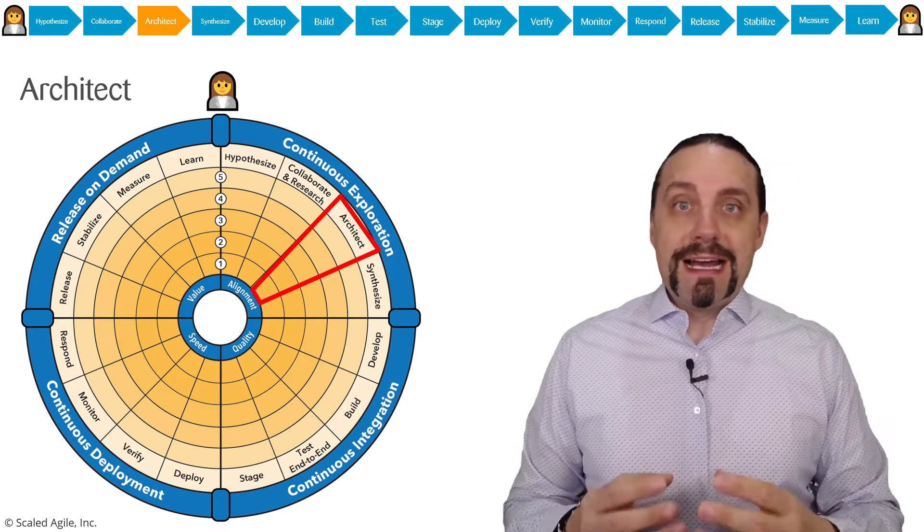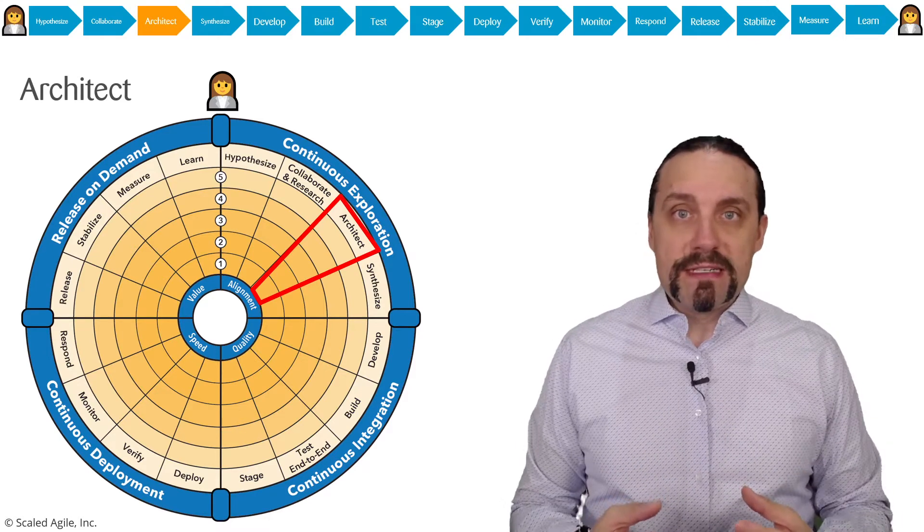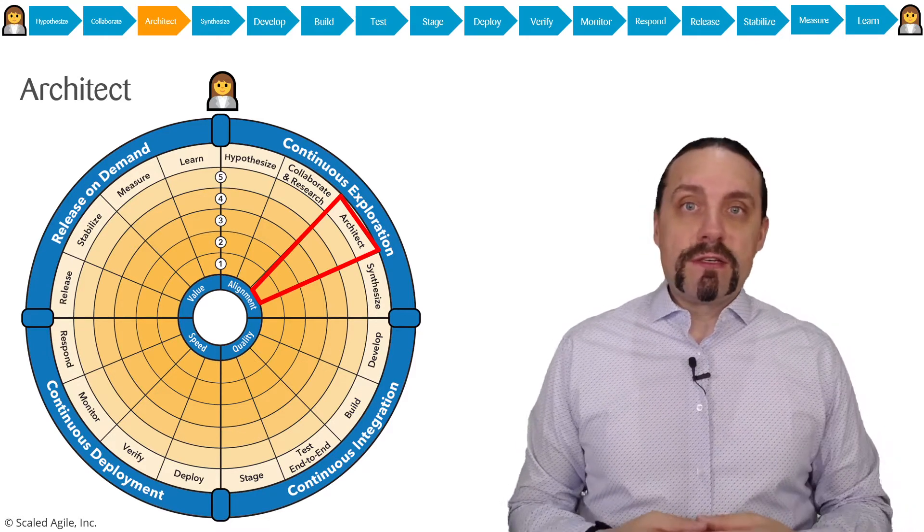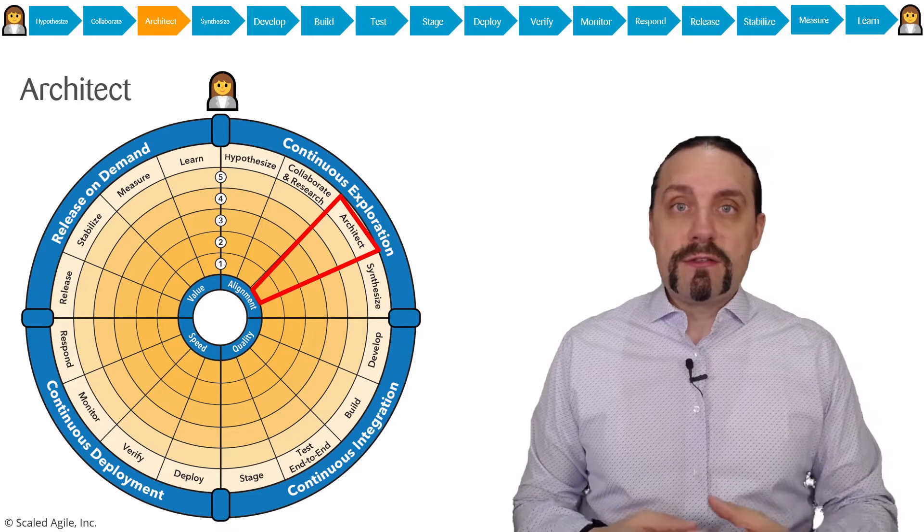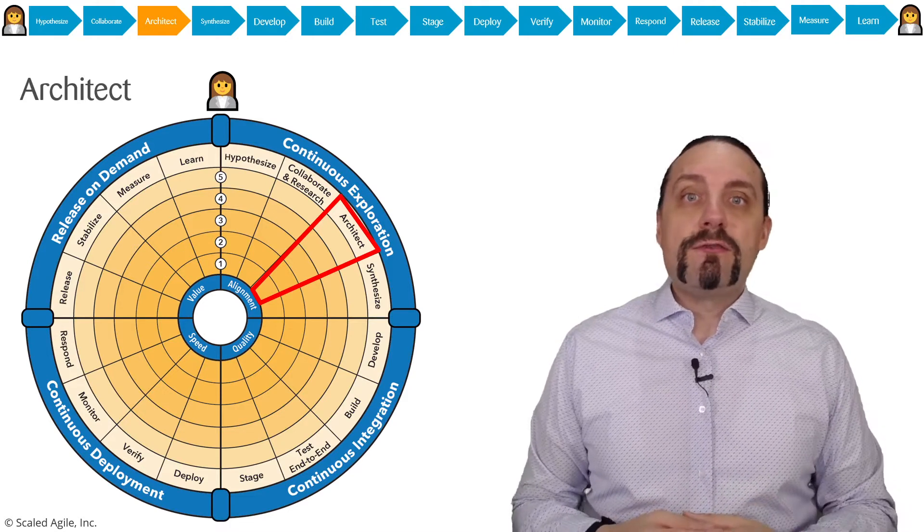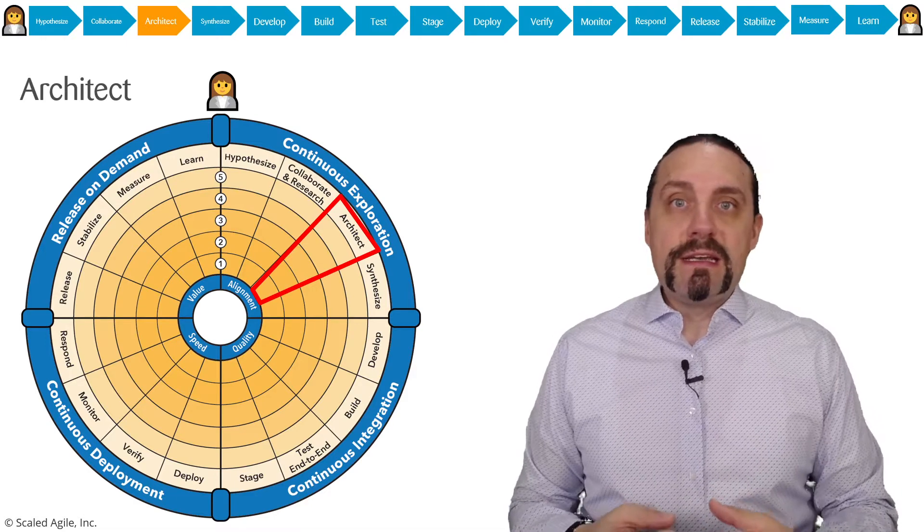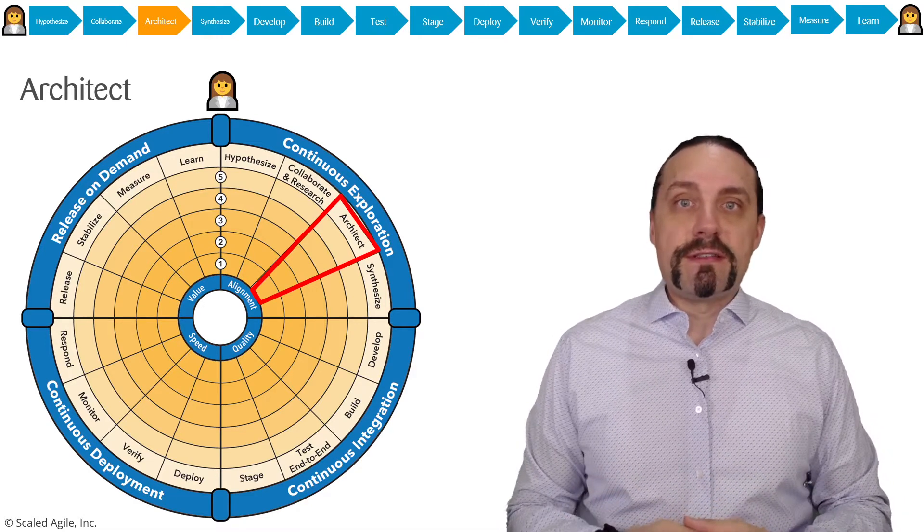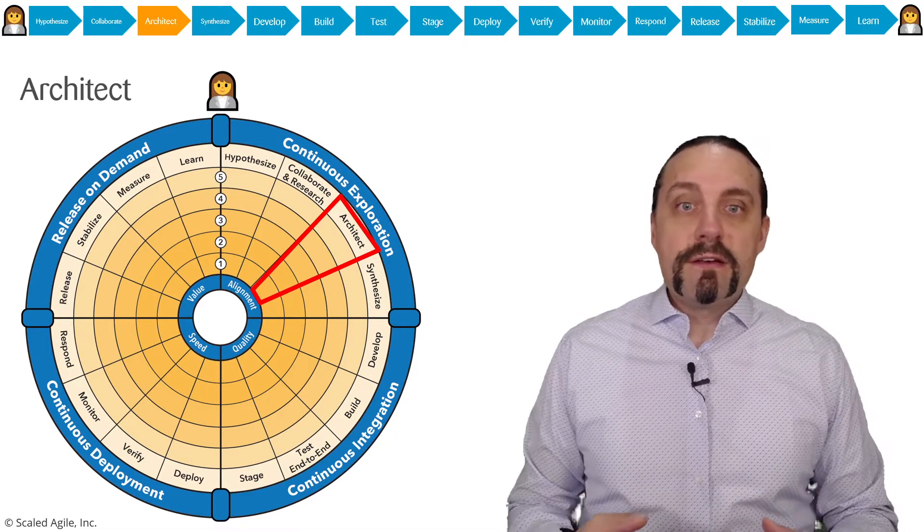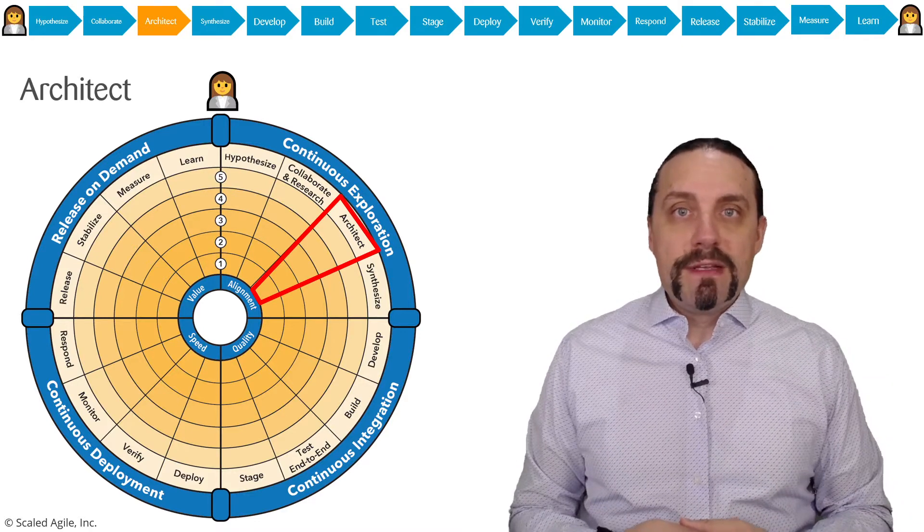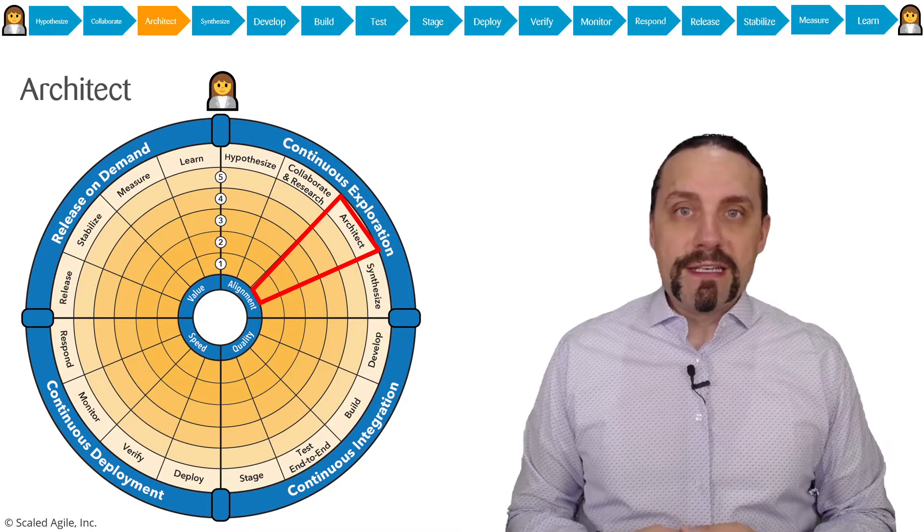With these epics we are going into the step collaborate and research. There we analyze the real customer needs, interview the customer, do market research, and update the business model behind these hypotheses. And after that we go into the architect step. Let's have a look at what we're doing here.